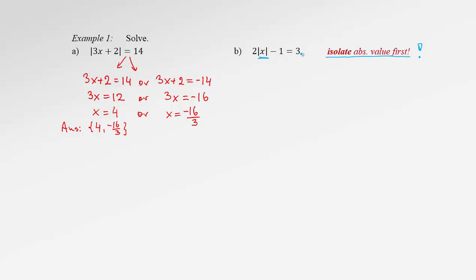So please remember: isolate absolute value first. Isolate means leave it alone on one side, and all other numbers or expressions should go to the other side. Let's move the 1 — 3 plus 1 would be 4 on this side. We still copy the 2 and absolute value of x; we didn't drop absolute value of x yet. Now we divide both sides by 2, and we have absolute value of x isolated, giving us 2 on the other side. Then apply the same strategy: drop absolute value by rewriting in two cases — x is either 2 or negative 2. The answer is the set of negative 2 and 2.